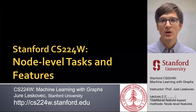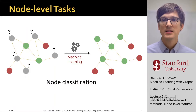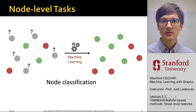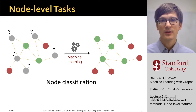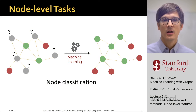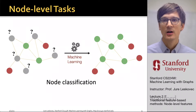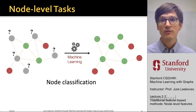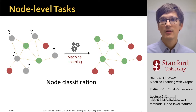First, we are going to talk about node-level tasks and features that describe individual nodes. We are thinking of this in what is known as the semi-supervised case, where we are given a network and a couple of nodes labeled with different colors, and the goal is to predict the colors of uncolored nodes. For example, given the red and green nodes, we want to color the gray nodes. The rule here is that green nodes should have at least two edges adjacent to them, while red nodes have exactly one edge connected to them.